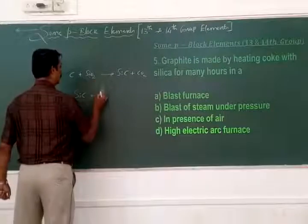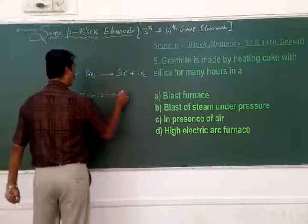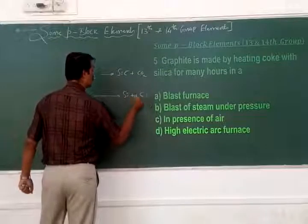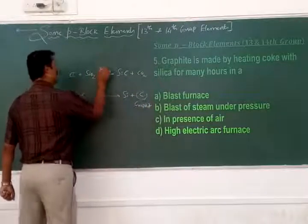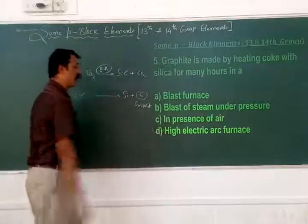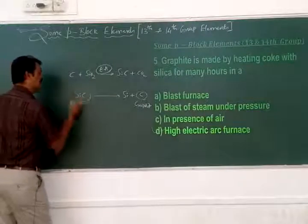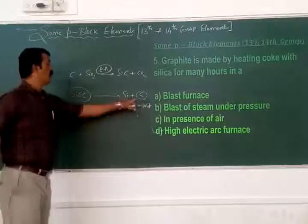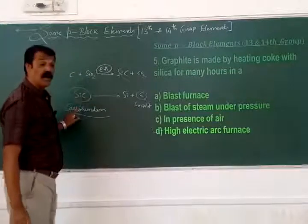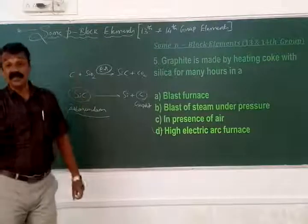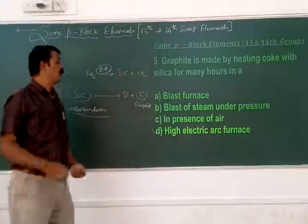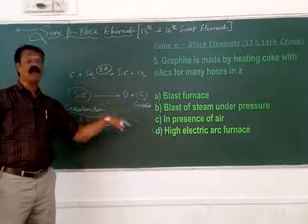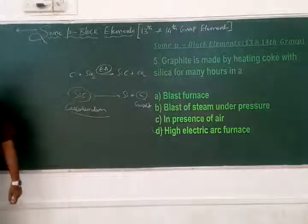Silicon carbide, on further heating, converts into silicon plus carbon (graphite). Heating by high electric arc is necessary for this conversion. This silicon carbide intermediate is called carborundum. Carborundum is obtained during the preparation of graphite from coke and is a carbide of silicon. Therefore, graphite is made by heating coke with silica for many hours using a high electric arc furnace.